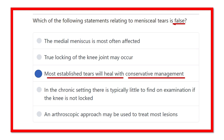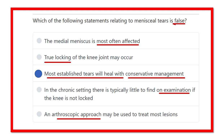The medial menisci is most commonly affected — that is true. Locking of the knee joint occurs — that is also true, though some patients may experience unlocking. In chronic setting there is typically little to find on examination — that means in a chronic ignored menisci tear it is difficult to identify. Arthroscopic approach may be used to treat the lesion — also true. So the only false option is that established tears are managed by conservative treatment; in this condition, we should go for surgery.